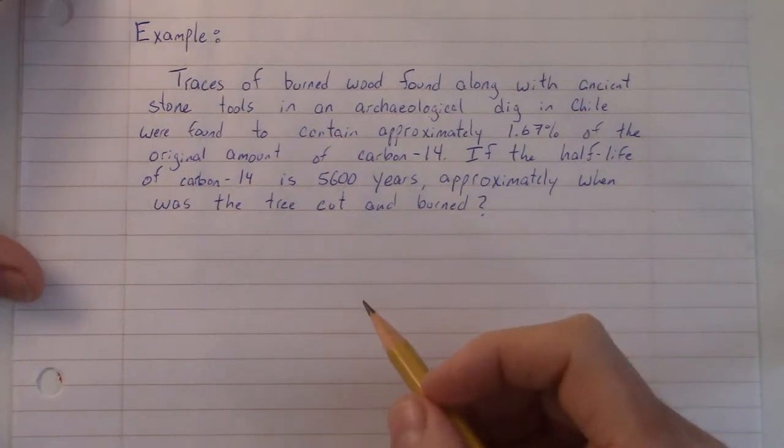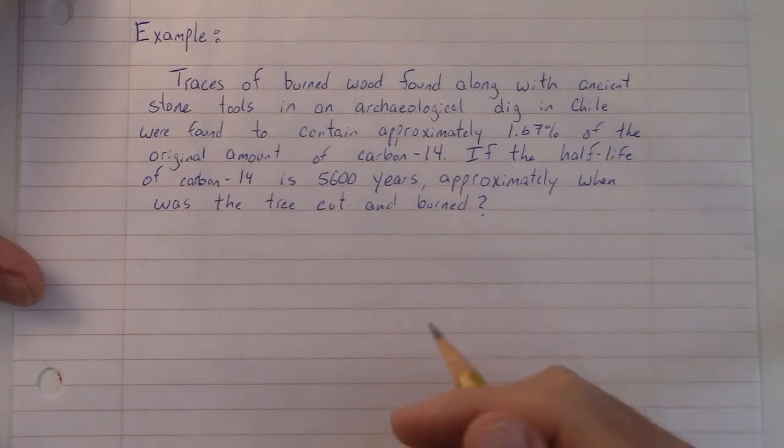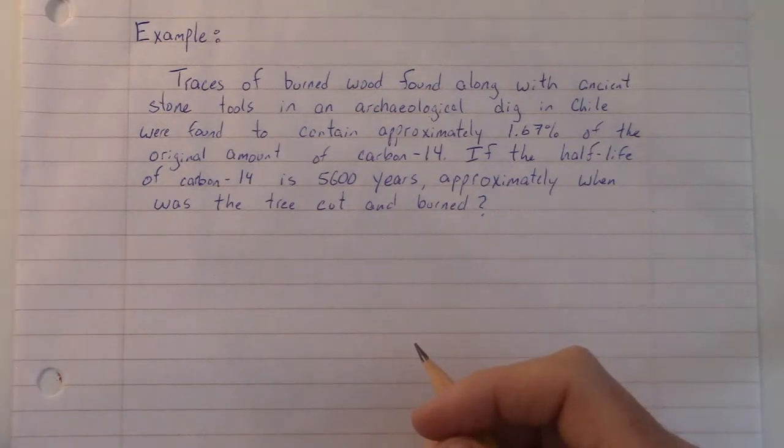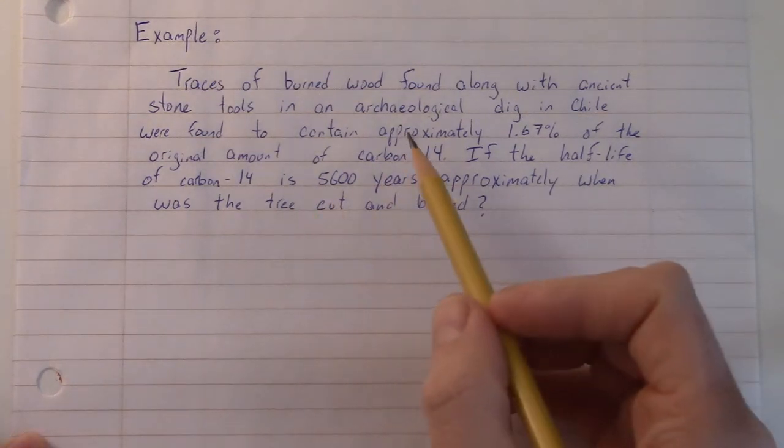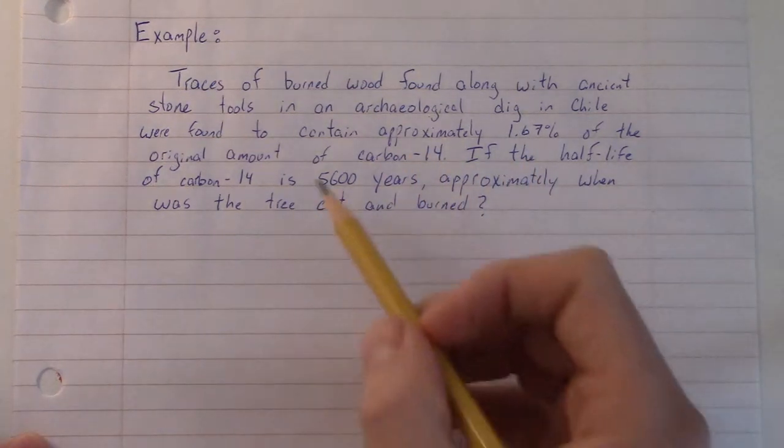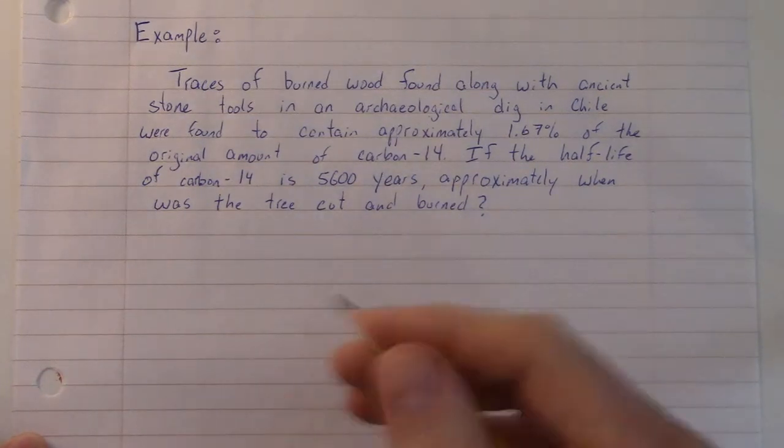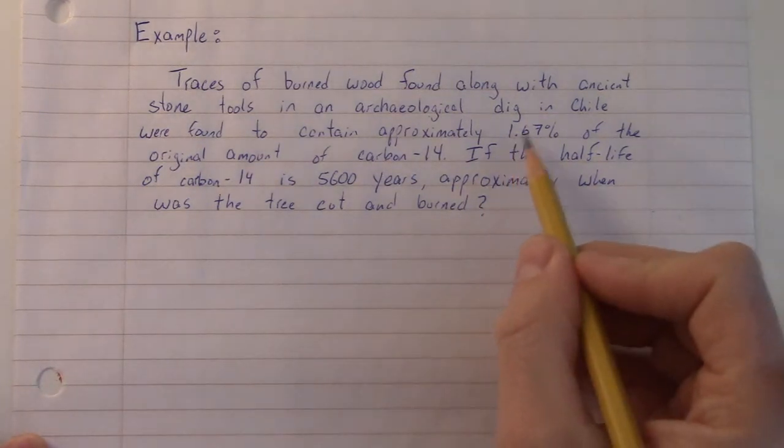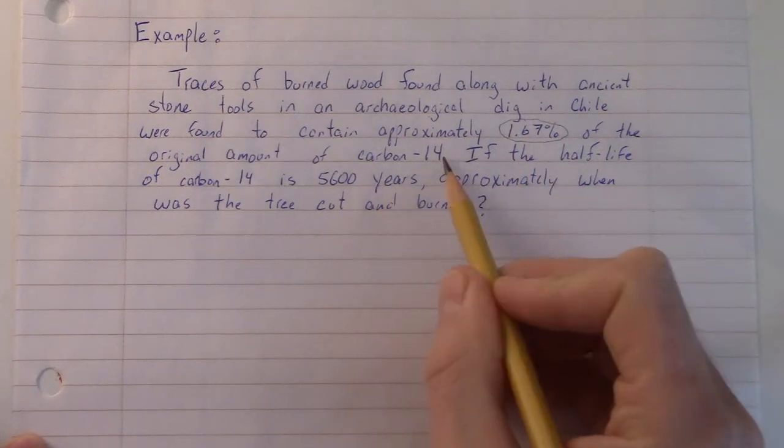These are typically pretty difficult problems because there's so much information in here and it's hard to determine what's important and what's not important. So, the fact that we've got an archaeological dig in Chile, that's not really important. They found some stuff. That's what you're trying to basically take away from this. So they found something. It's got 1.67%, that's important information, of the original amount of carbon-14.